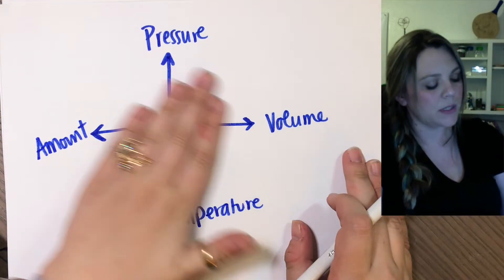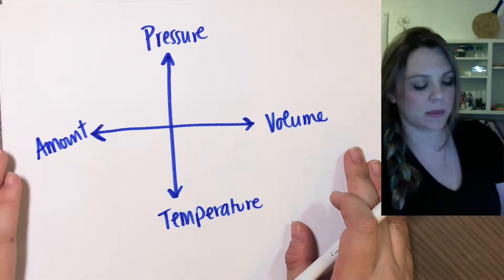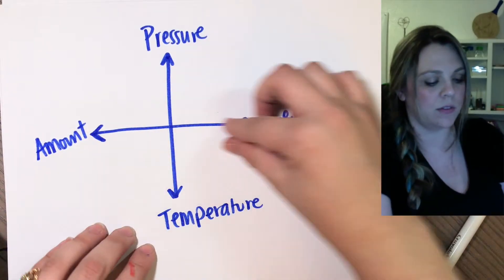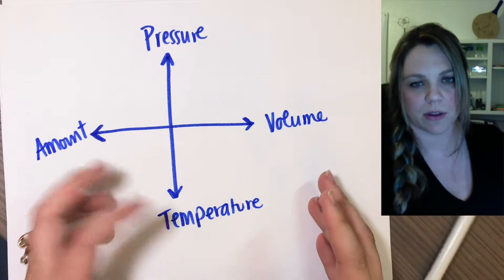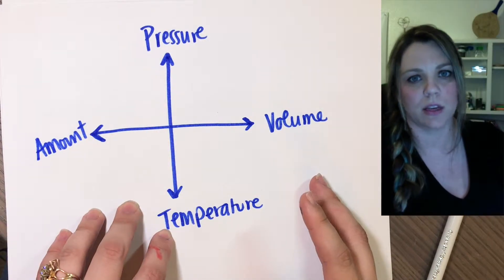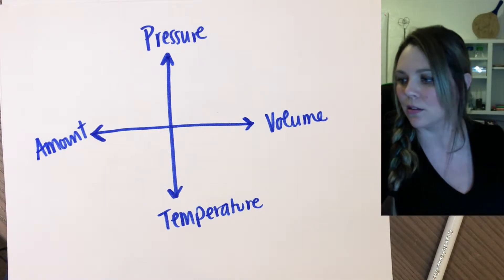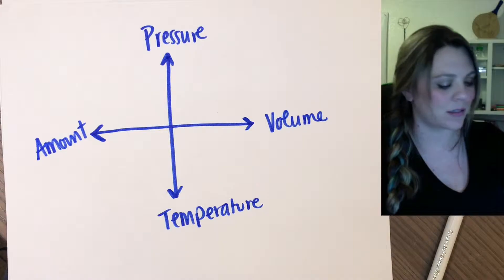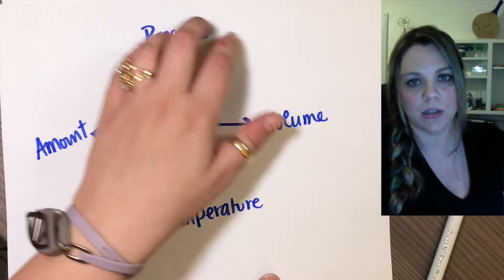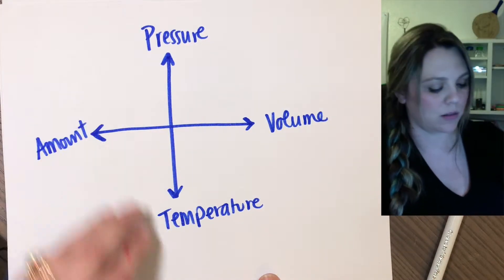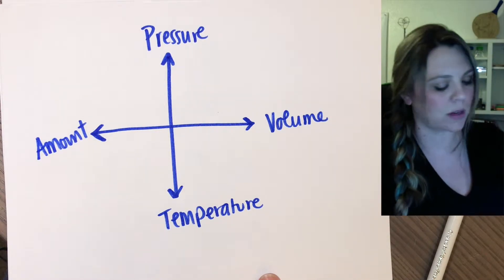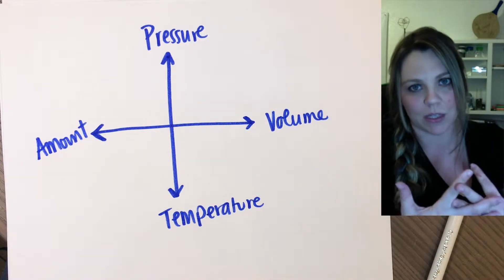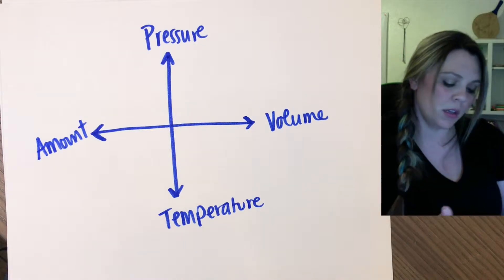The reason I loved this when someone showed it to me was: if you push on one part of the compass, the other things are affected; if you pull on one part, the other variables are affected. If you just look at it like a list, you don't really get that sense that if I change pressure something else is affected, or if I change temperature something else is affected.